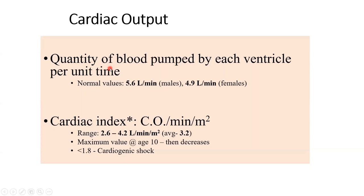A very common student mistake when defining cardiac output is saying 'quantity of blood pumped by the left ventricle into the aorta.' If you understand the cardiovascular system as one unit, you should recognize that the blood coming into the left side of the heart is coming from the right side. If the right heart doesn't push five liters per minute, where will the left heart get it from? They are in series.